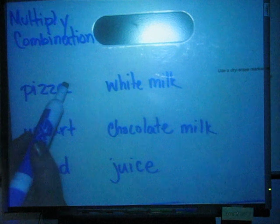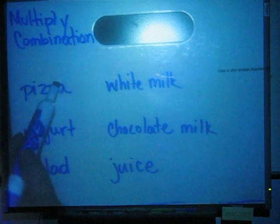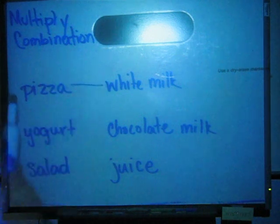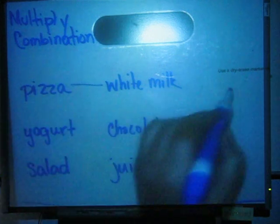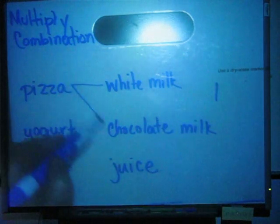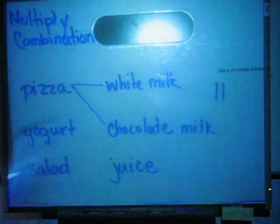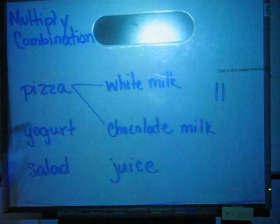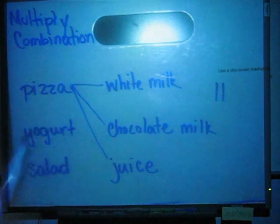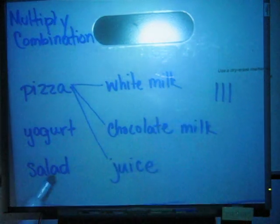One way is to draw lines. I could say I could have pizza and white milk for lunch — that's one combination. I could have pizza and chocolate milk for lunch — that's two combinations. I could have pizza and juice for lunch — that's three combinations.